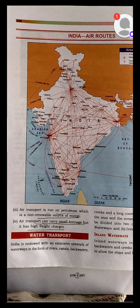The air transport in India was managed by 2 corporations: Air India and Indian Airlines. The government had ended the policy of Indian Airlines and Air India, and adopted the open sky policy.